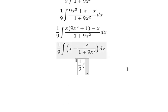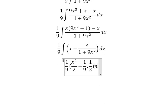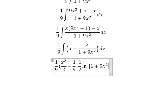The integration of x you got x² over 2. The integration of this one we have coefficient of 9, so we have 1 over 9, and we have x², so we have 1 over 2, and we have ln of the absolute value of 1 plus 9x².